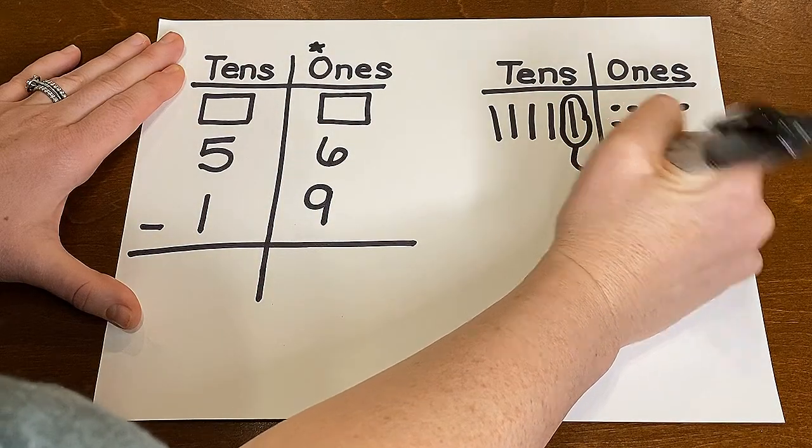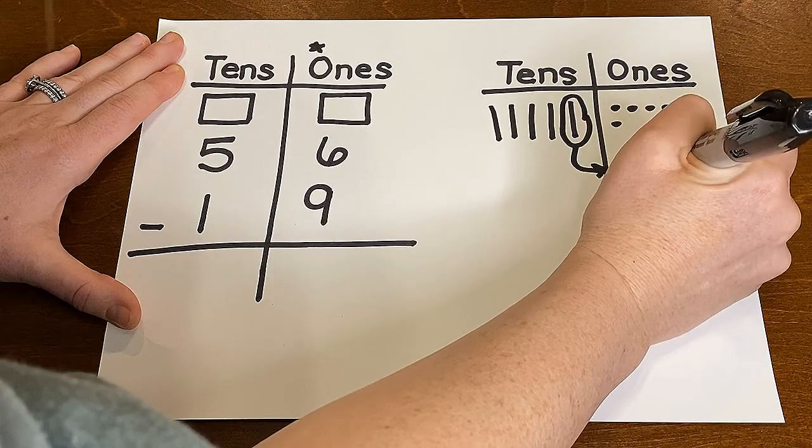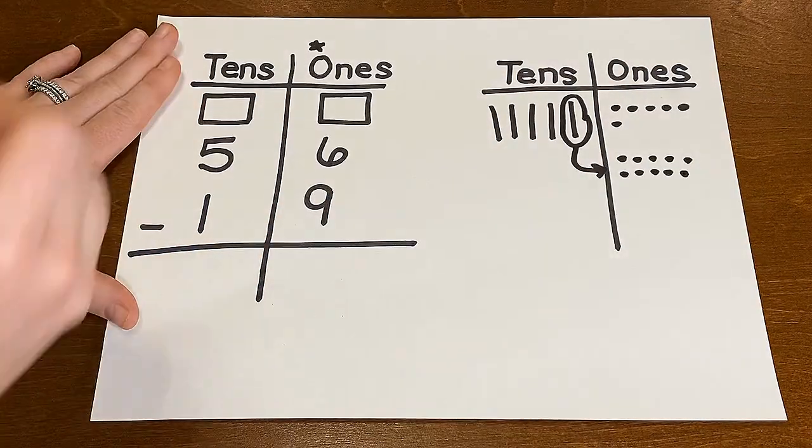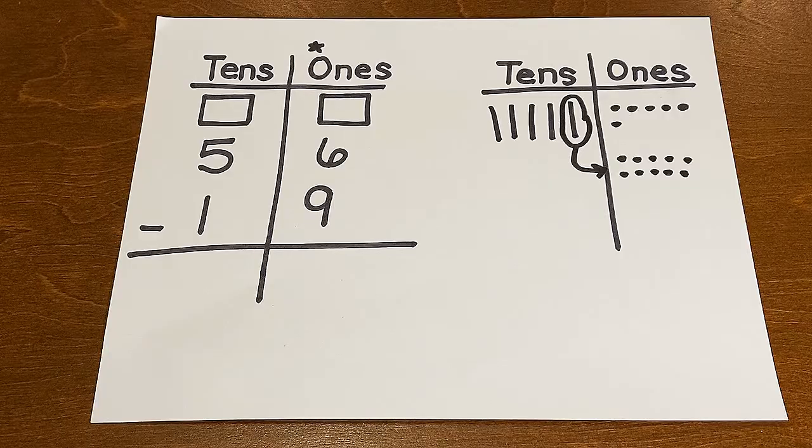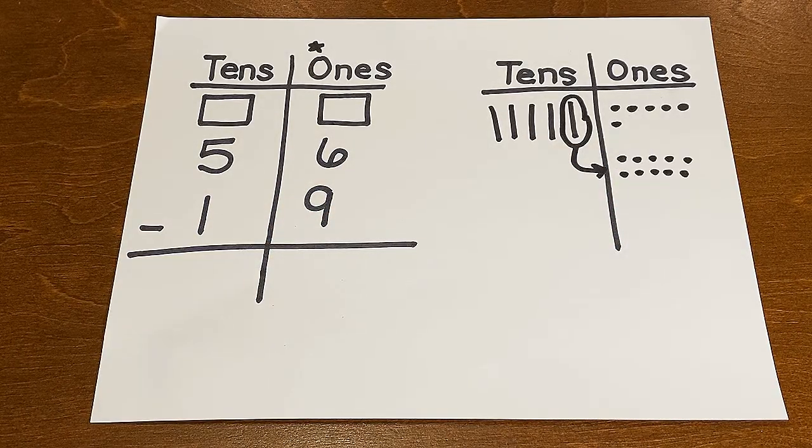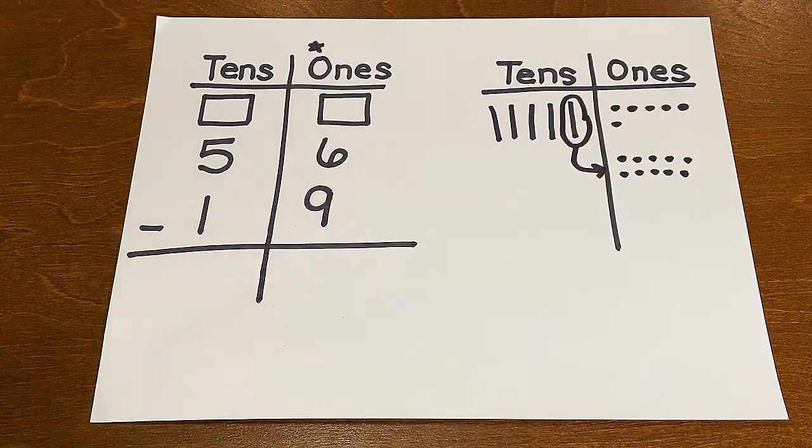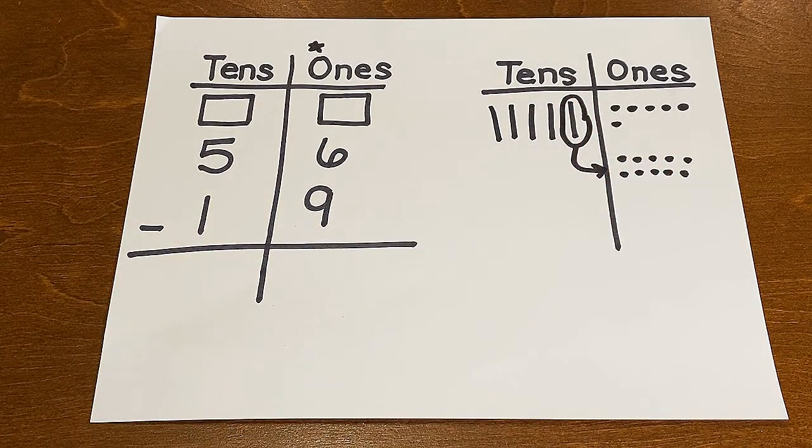And I know the value of that ten is ten ones. So now that ten becomes ten ones. Two, four, six, eight and ten. Now let's take a look here. Let's look at this picture. What did I just do? Well I took one ten and I regrouped it as ten ones.